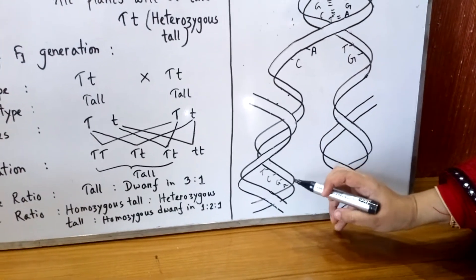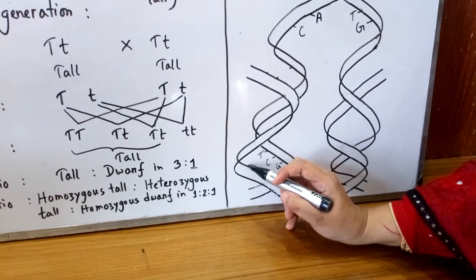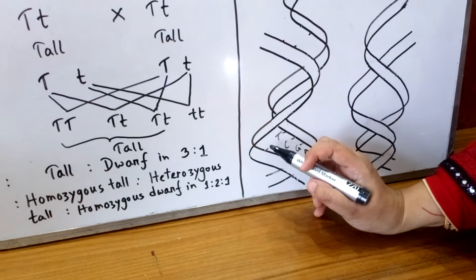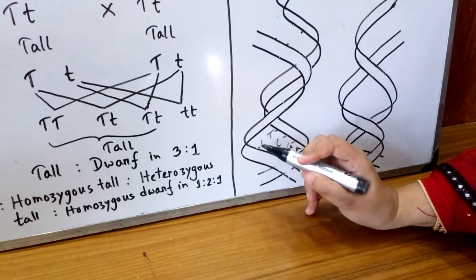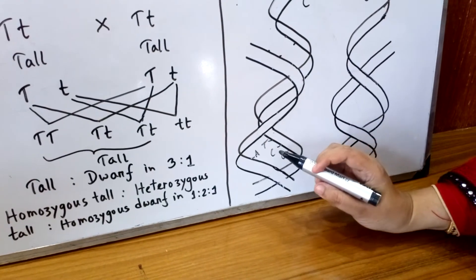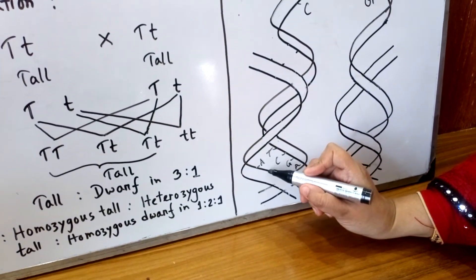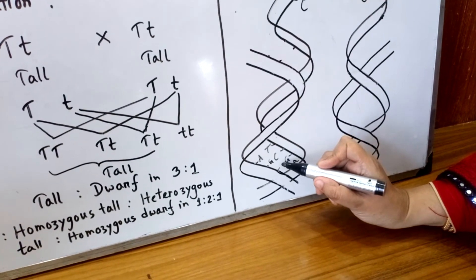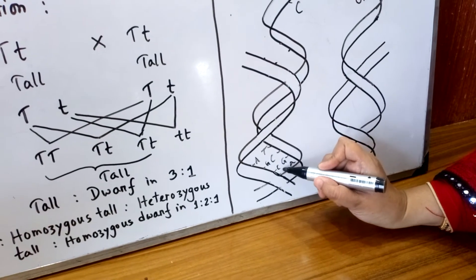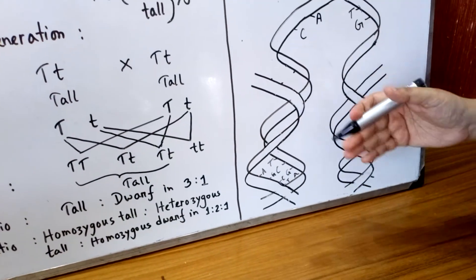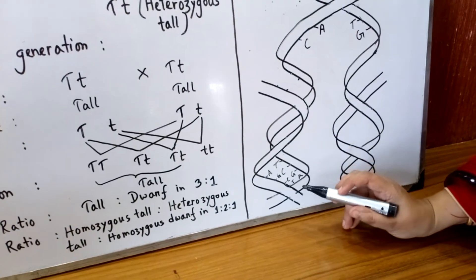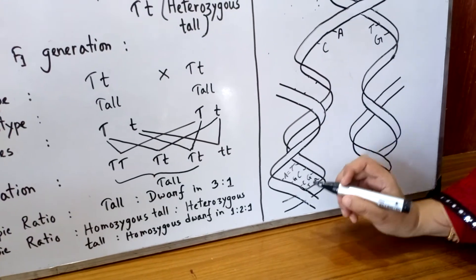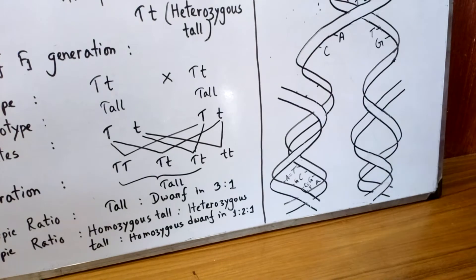Writing down the complementary nitrogenous bases for the new strand: if the old strand reads T, C, G, A, then the new strand will read A, G, C, T. For the other old strand, you apply the same rule. Between adenine and thymine there are two hydrogen bonds, and between guanine and cytosine there are three hydrogen bonds. You have to make sure all complementary nitrogenous bases are correctly written in the new daughter DNA strand.